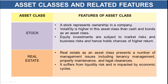A stock represents ownership in a company. Stocks, also referred to as shares, are traded in the share market. Volatility is higher in this asset class than cash and bonds. Stock markets are subject to fluctuations — every time there are buyers and sellers in the stock market which determines the price of a particular share, so there is a lot of fluctuation. If volatility is higher, the risk is on the higher side, but the chances of higher returns are also there in equity investments.